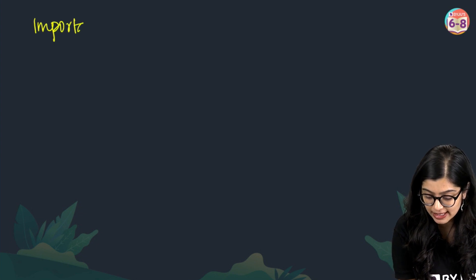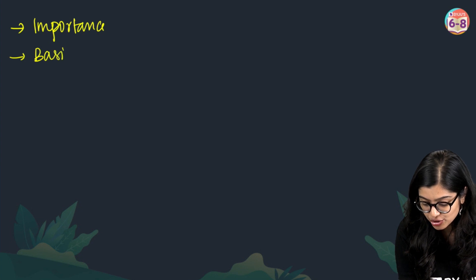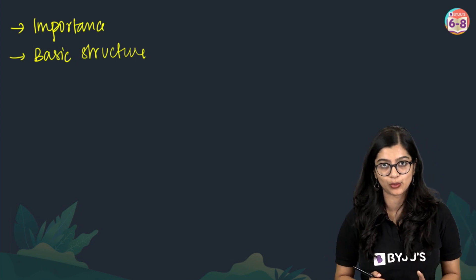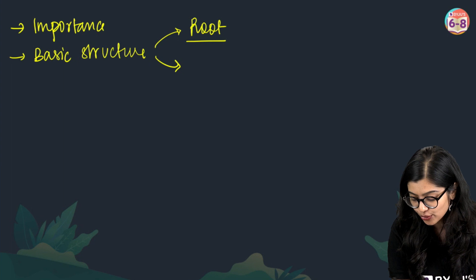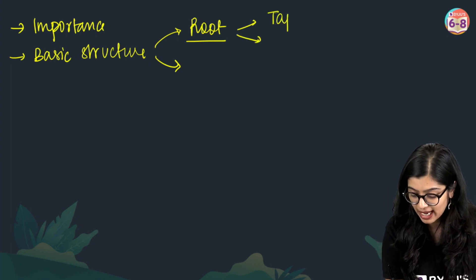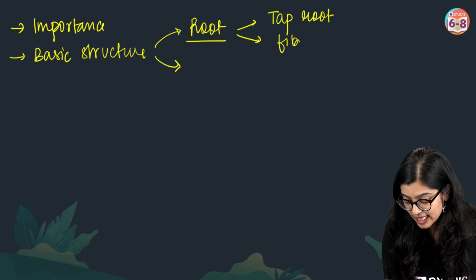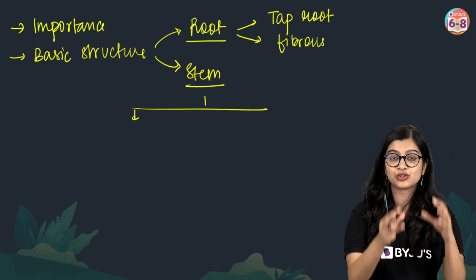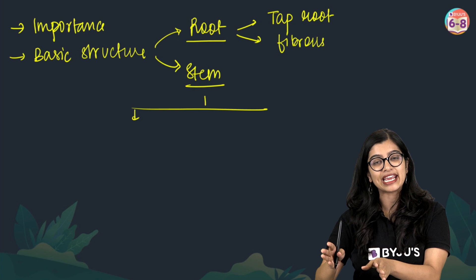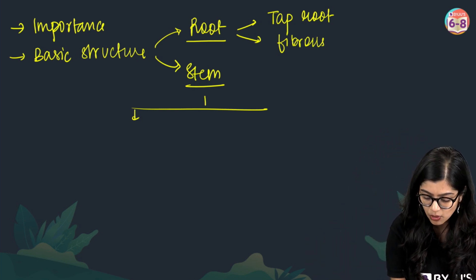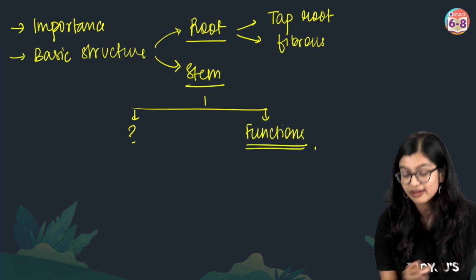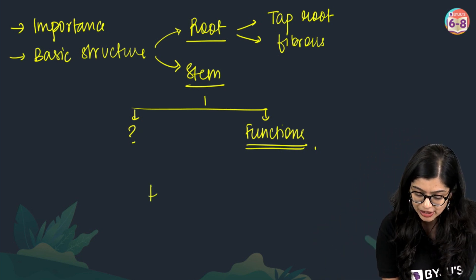To summarize: we learned about the importance of plants, their basic structure — roots, stem, leaf, flowers, and fruits. We learned about the importance of roots, the two types of roots — tap root and fibrous root — and how plants are categorized into herbs, shrubs, trees, creepers, and climbers based on their stem, along with the functions of the stem.